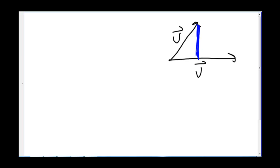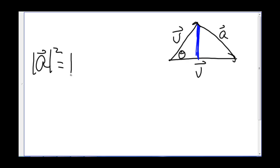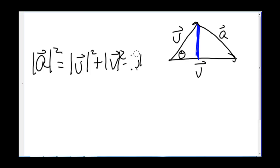So first, we know that if we complete this triangle, and we call this angle theta, and we call this side a, then we have by the law of cosines: the length of a squared equals the length of u squared plus the length of v squared minus 2 times the length of u times the length of v times cosine of theta.